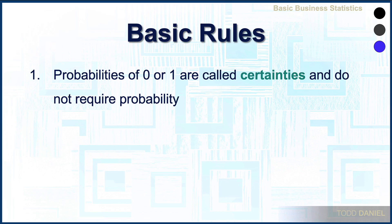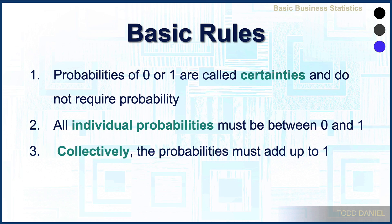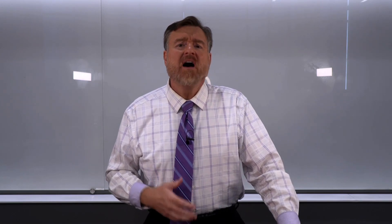There are some basic rules about interpreting probabilities. Probabilities of 0 or 1 are called certainties — they don't require probability because we know the event either will or will not occur. All individual probabilities must be a value between 0 and 1. Collectively, all of the probabilities must add up to 1. For example, the probability of heads is 0.5 and the probability of tails is 0.5 — collectively they add up to 1. You may also hear the term non-zero probability. A non-zero probability means that a likelihood is possible without confirming exactly how likely it is, so it means that something is unlikely but not impossible.